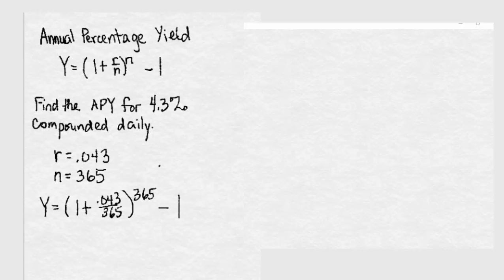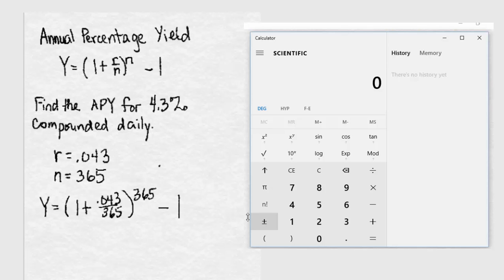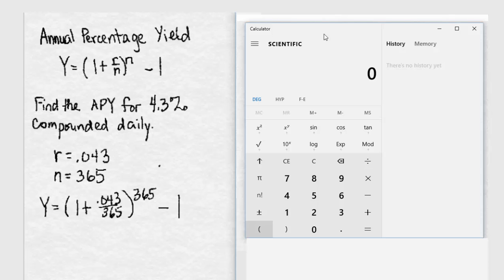Let's get out our calculator. Order of operations is very important, and we need to make sure that the calculator understands what we want to do first. I have a scientific calculator, and I'm going to take advantage of the parentheses on the calculator. So I'm going to put in parentheses, but inside the parentheses division comes first. So I'm going to type in 0.043 divided by 365,